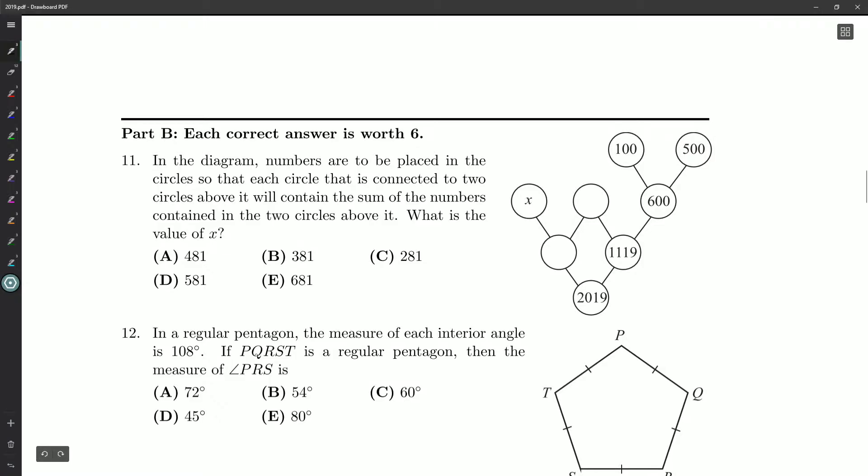Question 11 has to do with this bubbly picture over here. In the diagram, numbers are to be placed in the circles so that each circle that is connected to two circles above it will contain the sum of the numbers contained in the two circles above it. Very wordy,